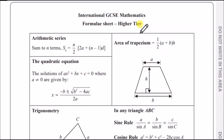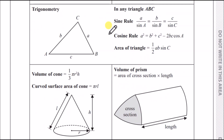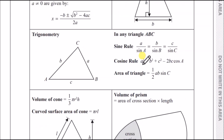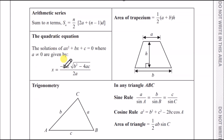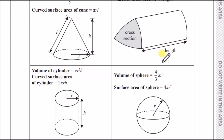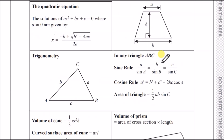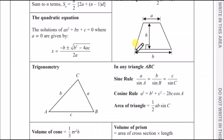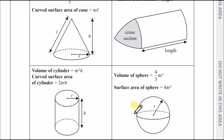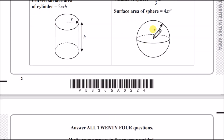As always, every paper gives you a formula sheet. They pretty much give you all the best formulas — triangle formulas, the quadratic equation, areas of trapeziums, volumes, and so on. All the hard ones are here. They're missing a couple of easy ones, but frankly those aren't too bad. These are the hard ones to memorize, so it's good they provide them.